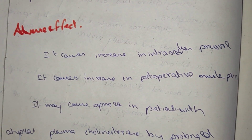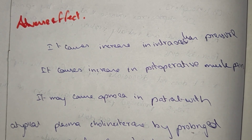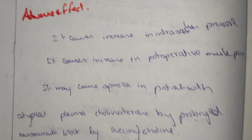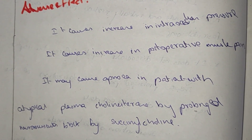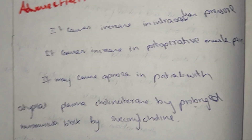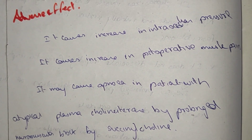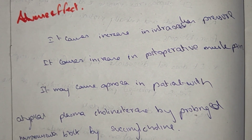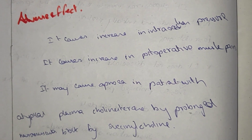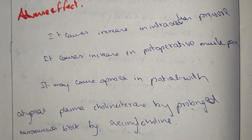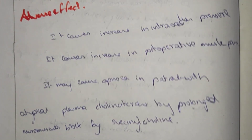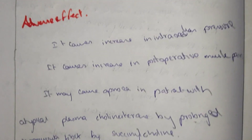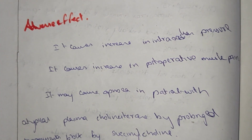The adverse effects of succinylcholine include increased intraocular pressure, which is the most common adverse effect. It also causes post-operative muscle pain and apnea in patients with atypical pseudocholinesterase, due to prolonged neuromuscular blockade.